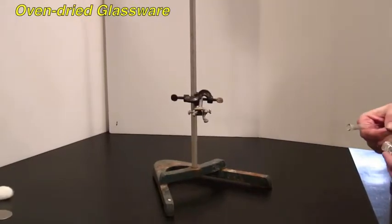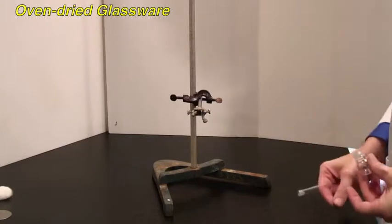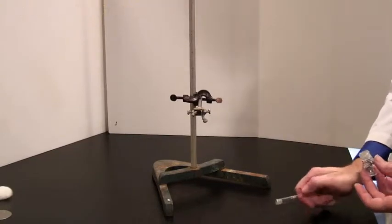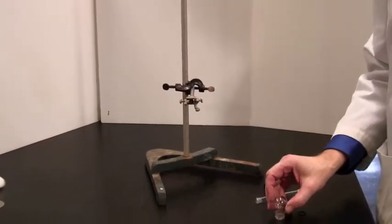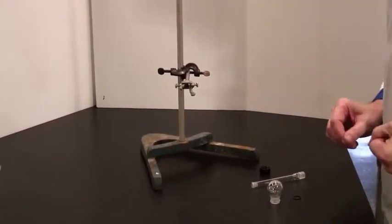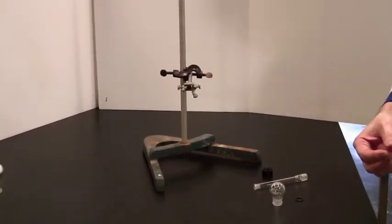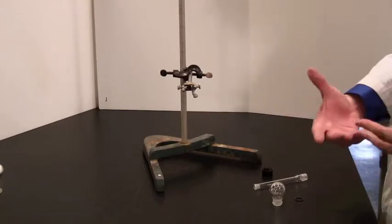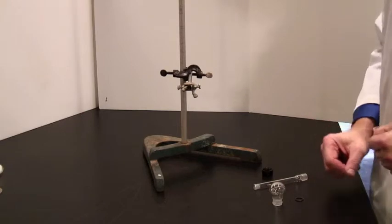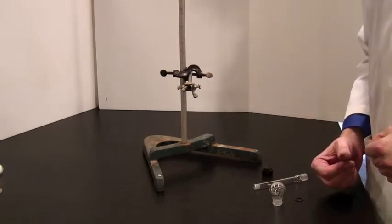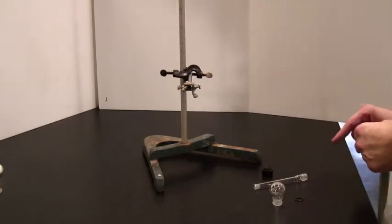Another useful thing in anhydrous technique is to actually oven dry your glassware. So you will have taken some of your glassware and popped it in the oven for a short overnight. Try and assemble the glassware while it is still warm, not burning hot, but while it is still warm, to ensure that any water that was adhering to the glass surface has been driven off by the heat.